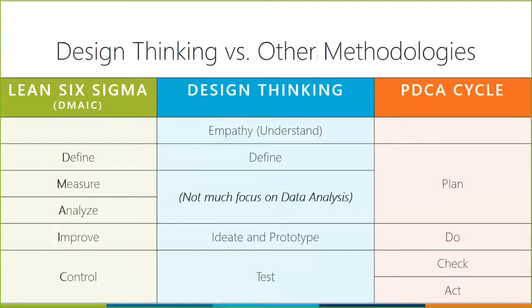Here's another way to look at this. I broke down the stages of three methodologies: DMAIC, which is Lean Six Sigma; design thinking; and PDCA. There are a lot of similarities between the three. Define, measure, analyze, improve, control sounds a lot like define, ideate, prototype, and test, which sounds similar to plan, do, check, and act. The difference is that first line is blank for DMAIC and PDCA — they don't specifically have a call-out or focus on empathy, the understanding piece. It's not a strong enough core focus with specific initiatives behind it. That's where design thinking is different.